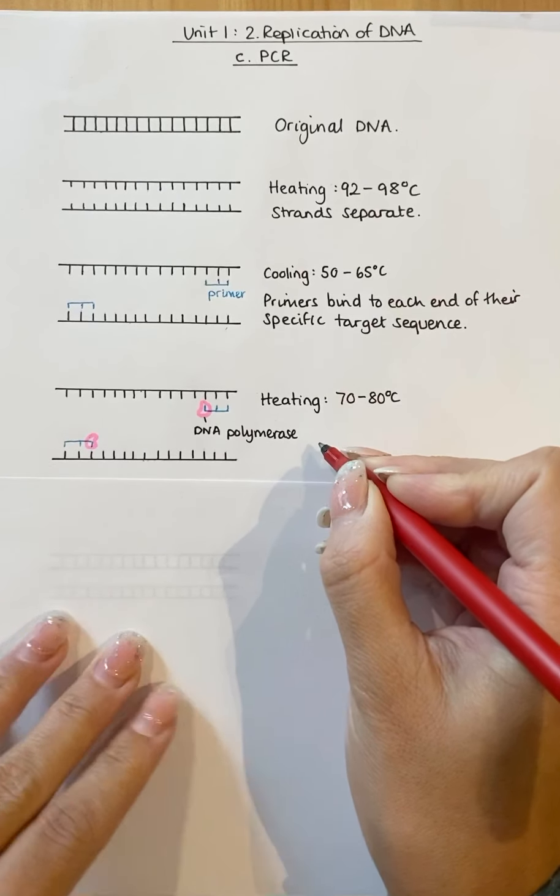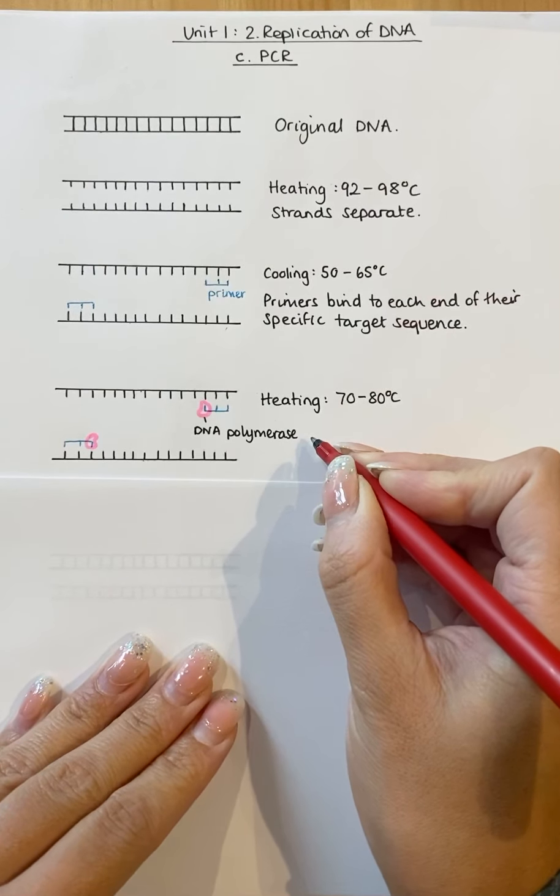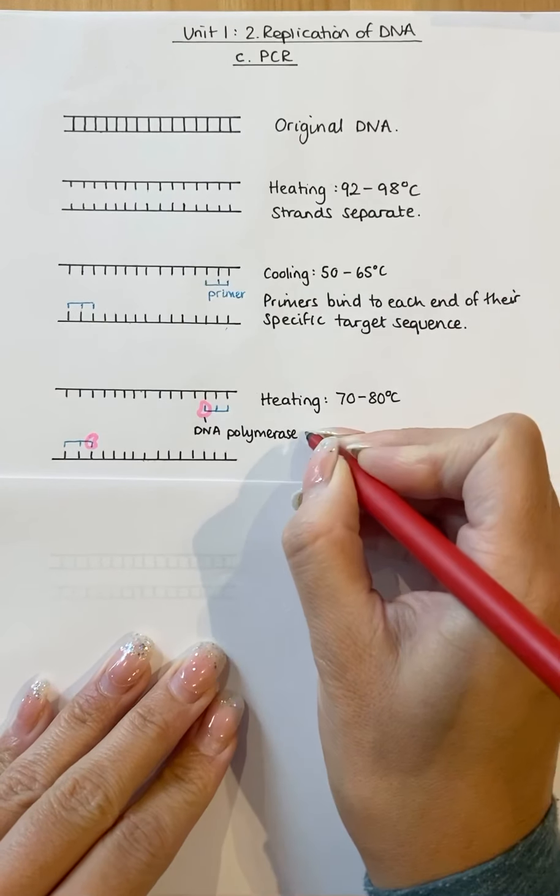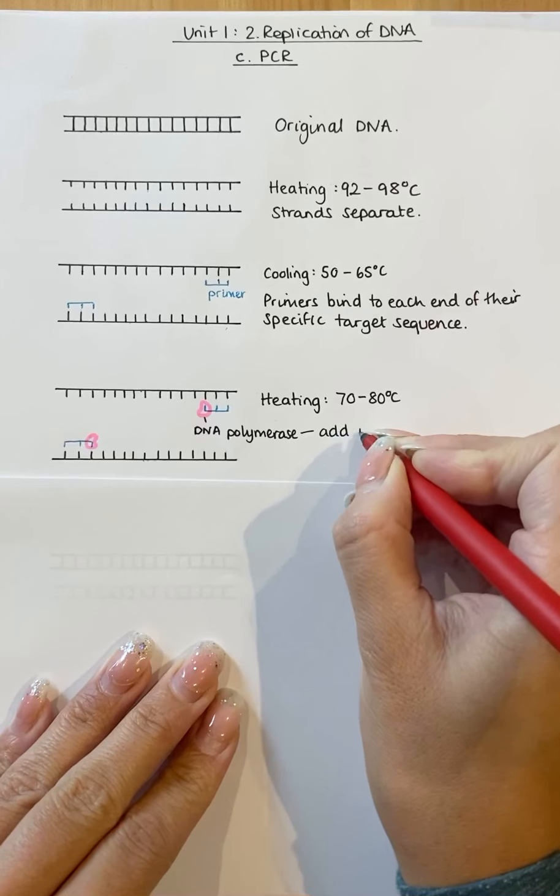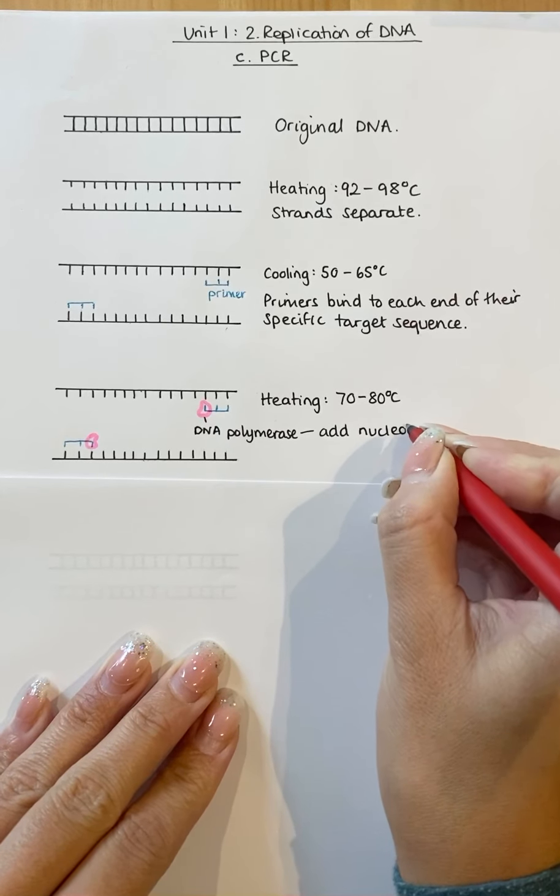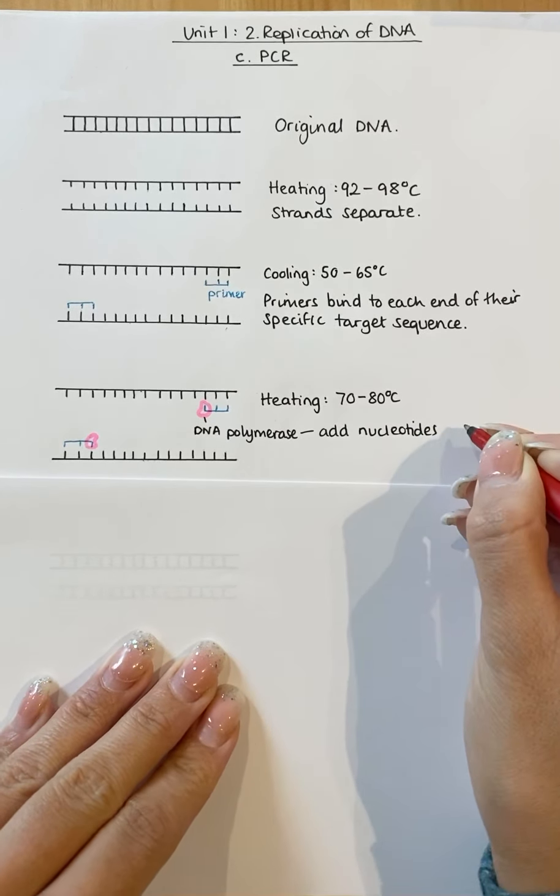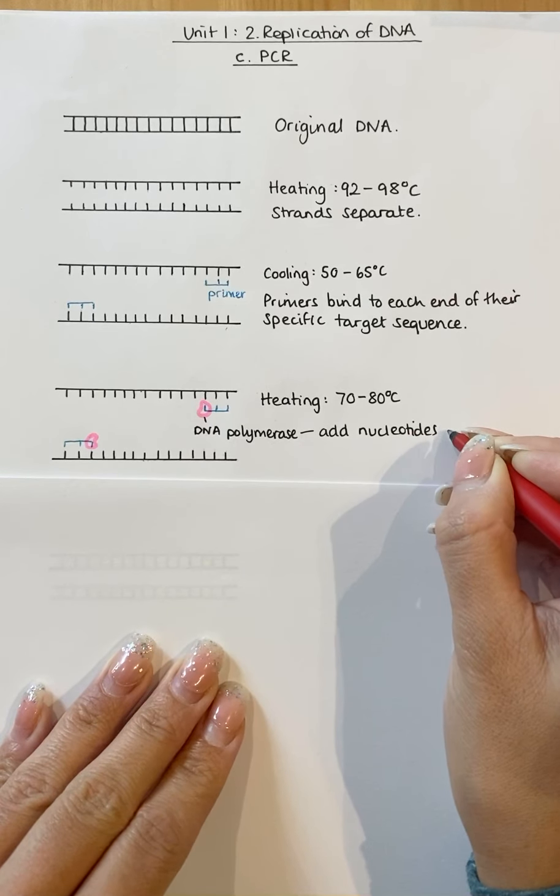Now, that brings the temperature to the DNA polymerase's optimum temperature, and that allows the DNA polymerase to add nucleotides to the primer, and specifically to the 3' end of the primer.